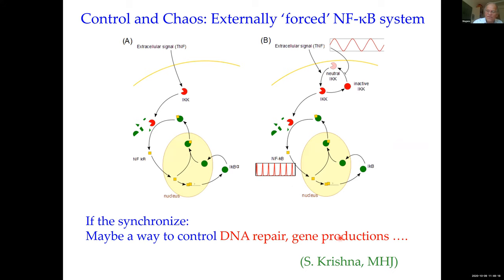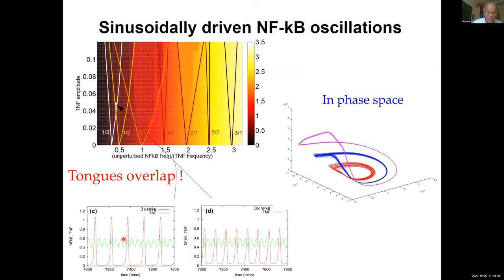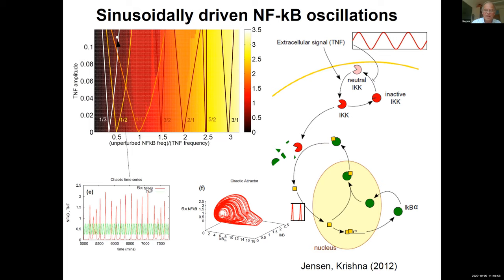I did this with Sandy Krishna. Briefly: the one-to-one tongue is where external TNF and internal NF-κB are completely in phase and locked. If tongues overlap, you can have the one-to-three tongue (external makes three periods while internal makes one) or one-to-two (external makes two periods while internal makes one). When tongues overlap, which state you go to depends on initial conditions. If many tongues overlap, you get a strange attractor and chaotic motion.